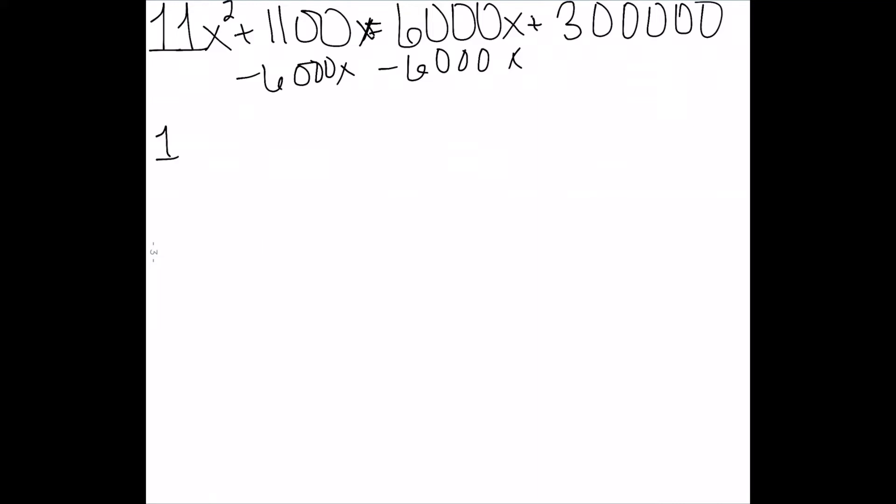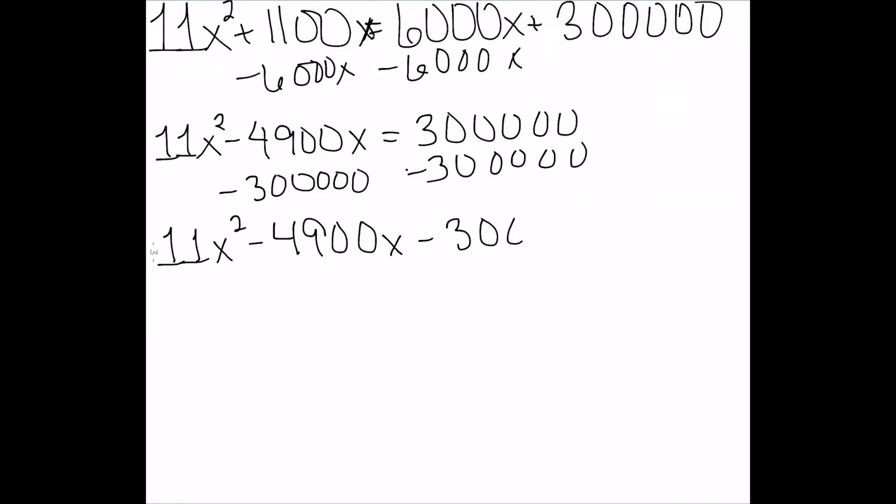That gives me 11x squared minus 4900x is equal to 300,000. I can then subtract 300,000 from both sides, and I get 11x squared minus 4900x minus 300,000 equal to zero.